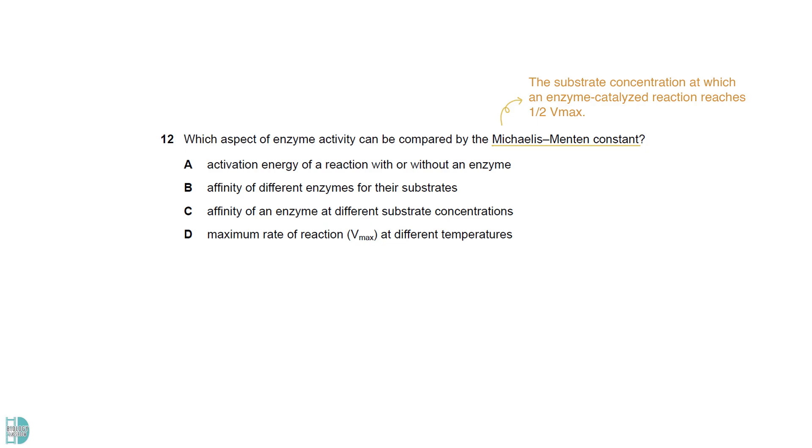The Michaelis-Menten constant is the substrate concentration at which an enzyme-catalyzed reaction reaches half of its maximum velocity. It reflects the affinity of an enzyme for its substrate, where a lower Km indicates a higher affinity.